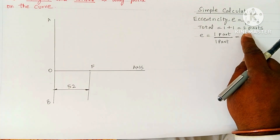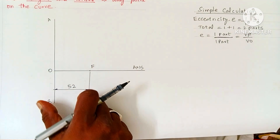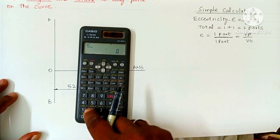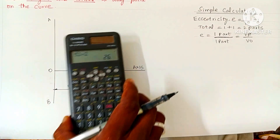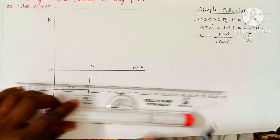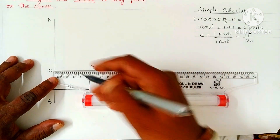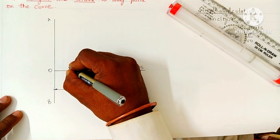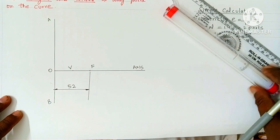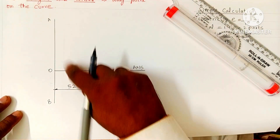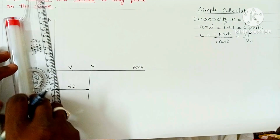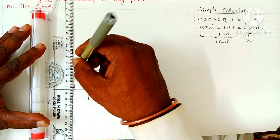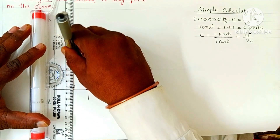OF is to be divided into 2 equal parts based on eccentricity of 1 by 1. Take your calculator: 52 divided by 2 equals 26 mm. Take 26 mm from point O on your roll-on scale — 2 centimeters plus 6 small divisions. This point is called vertex V. Through V, draw one vertical line parallel to the directrix by rolling the scale through the located vertex point.